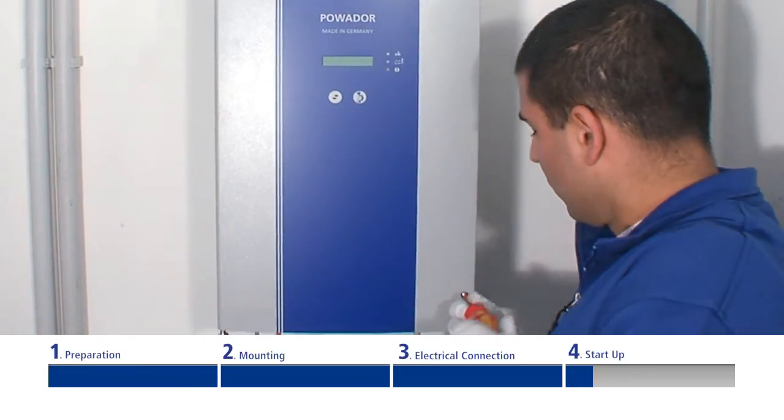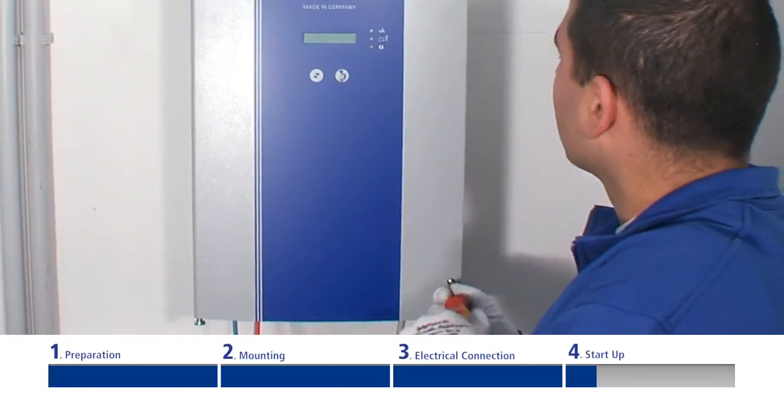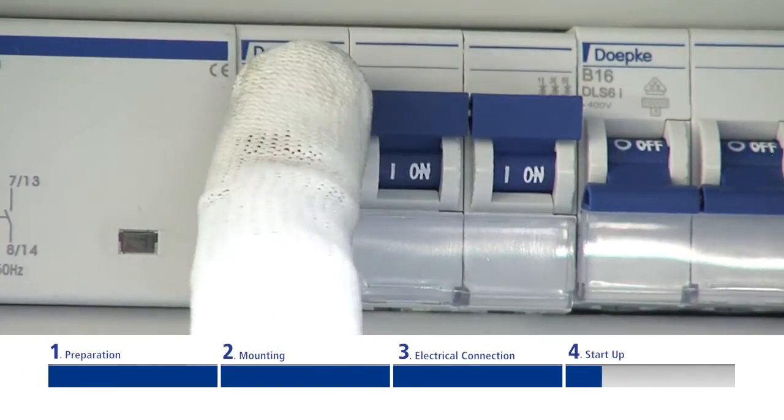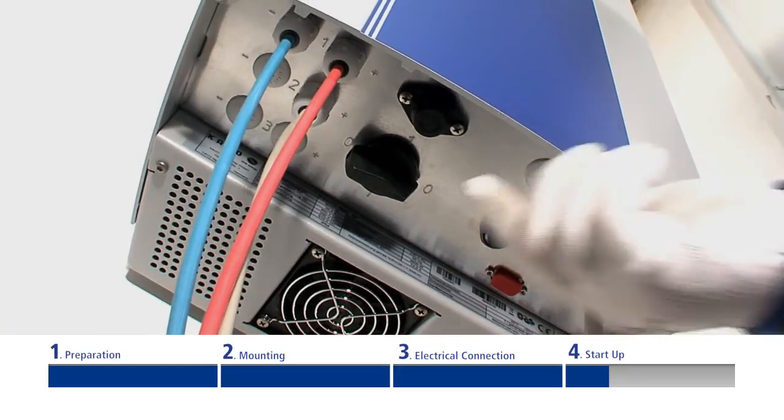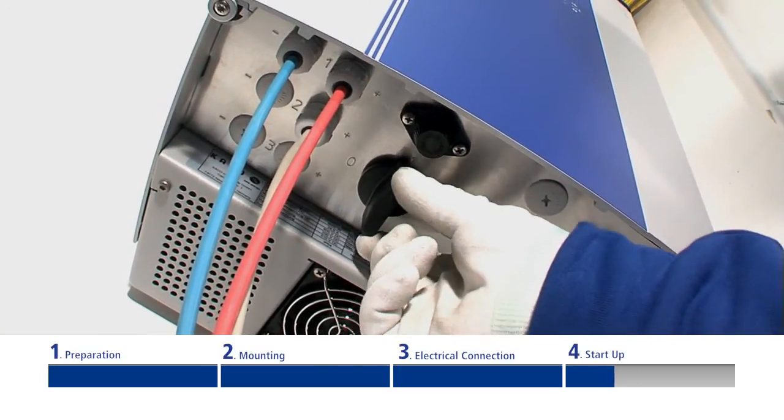Close the housing and secure the door with the two screws. Switch on the line voltage via the external circuit breakers. Afterwards, reconnect the solar generator via the DC disconnector.